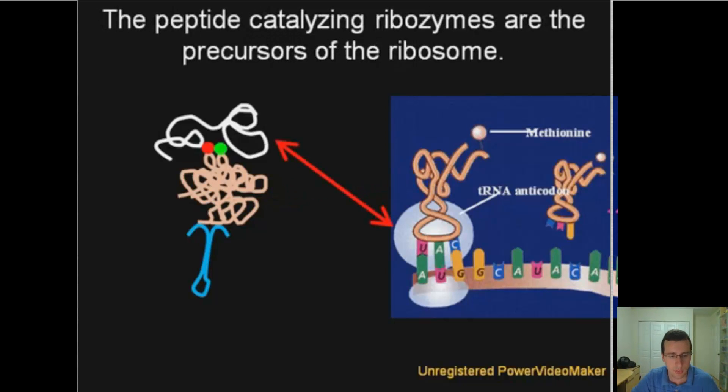And those other ribozymes involved in further facilitating the formation of the bond could be the precursors to today's ribosomes, which act as catalysts for the formation of peptide bonds. So there you have it.